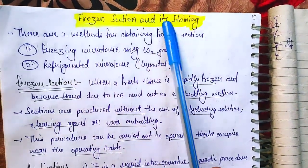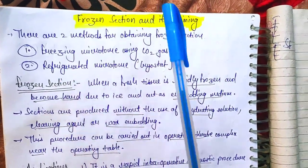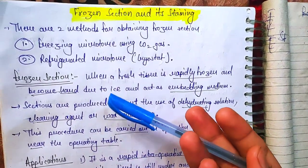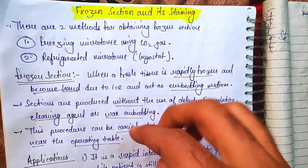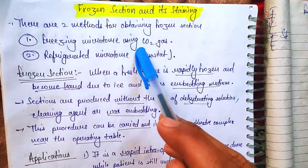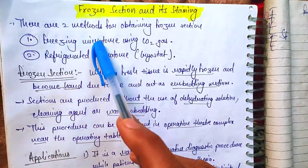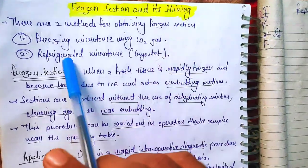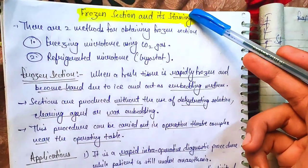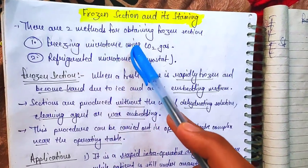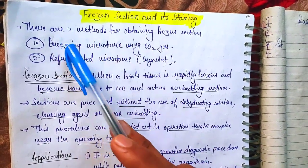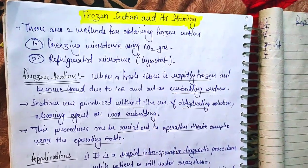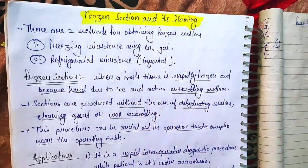Today's topic is frozen section and histaining. We will study the method of frozen section. One method uses CO2 with freezing microtomes, and the other is refrigerated microtomes, which we call cryo-state. Today we will study the frozen section and the freezing microtome using CO2 gas. Cryo-state will be studied in the next video.